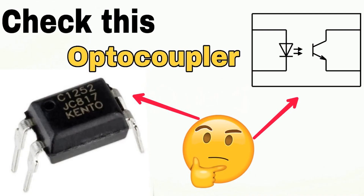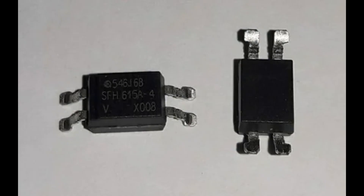The optical barrier — typically a gap or transparent/translucent material — separates the input section containing the LED from the output section containing the photosensitive component. The emitted light from the LED is directed across this barrier toward the output section. The photosensitive component, either a phototransistor or a photodetector/photodiode, is positioned on the other side of the optical barrier opposite the LED. When light emitted by the LED reaches the photosensitive component, it activates it.